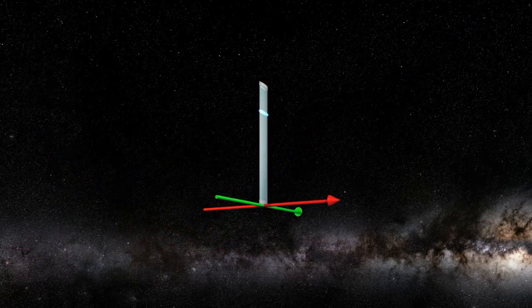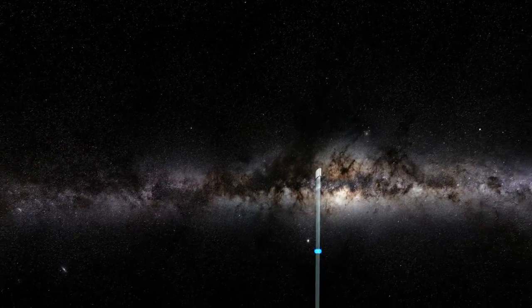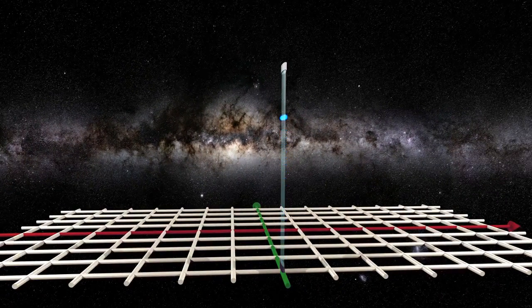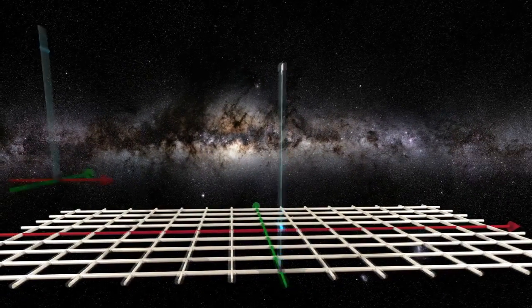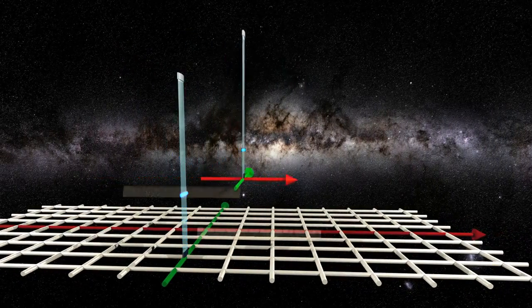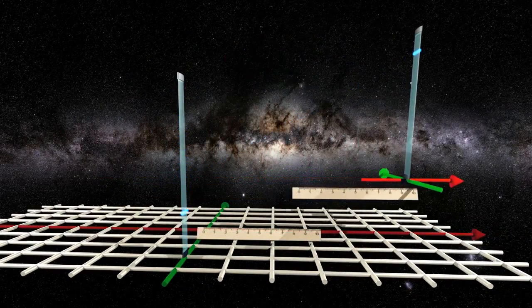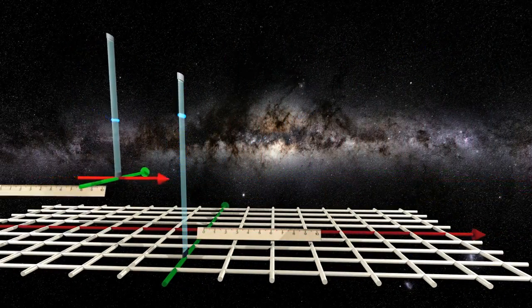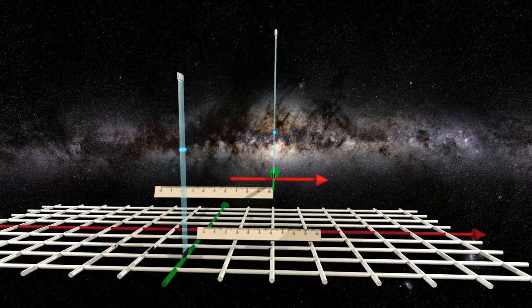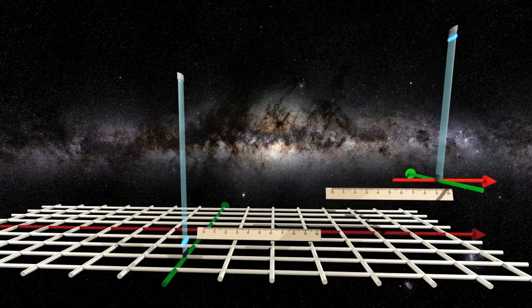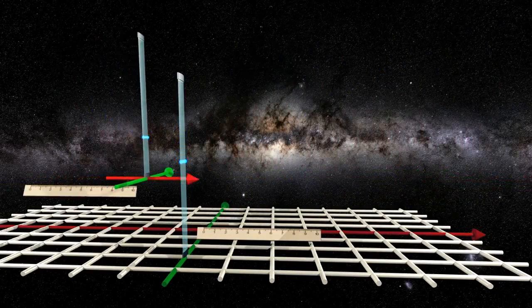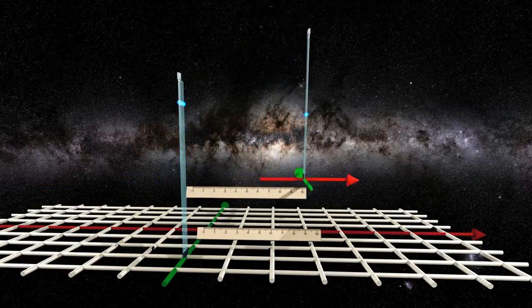But let us look again at the moving clock as seen from the stationary frame. There is still something strange about it. Let us add two identical rulers, one in each frame, both aligned along the direction of motion. And let us assume they have identical lengths as seen in the stationary frame.